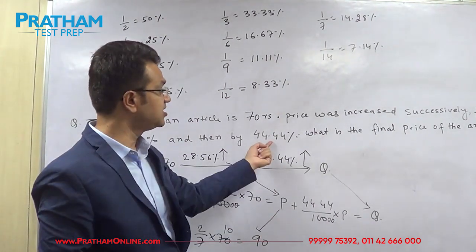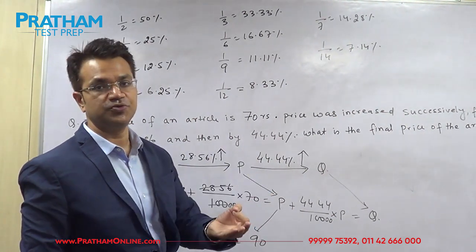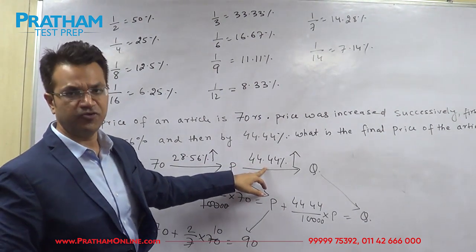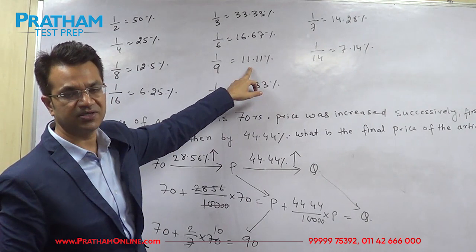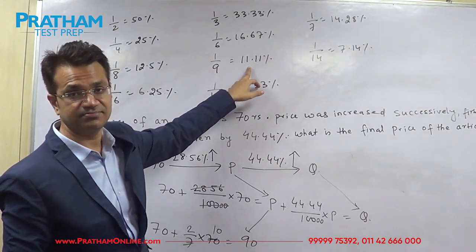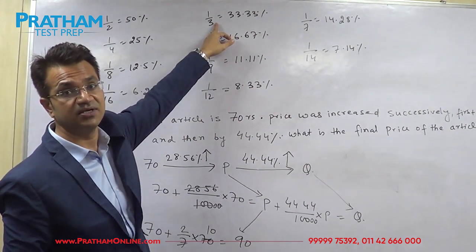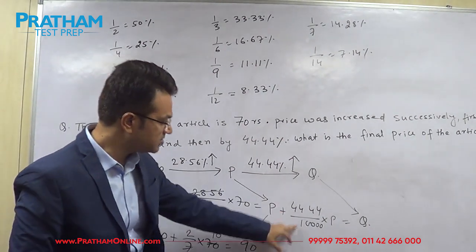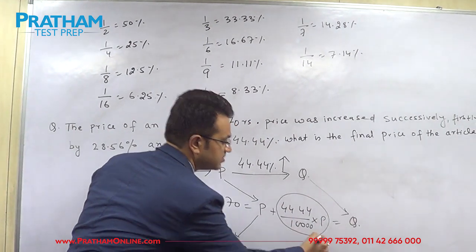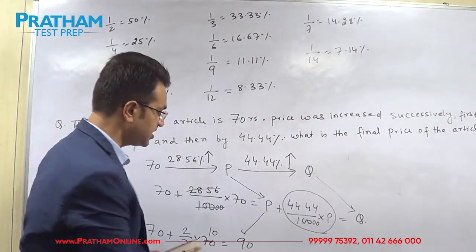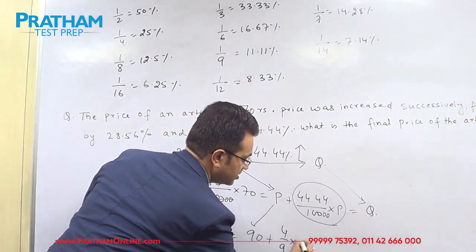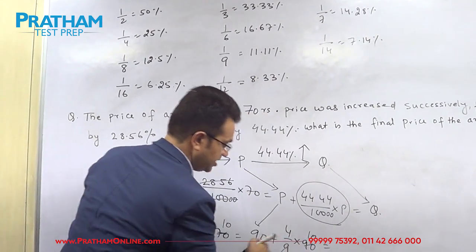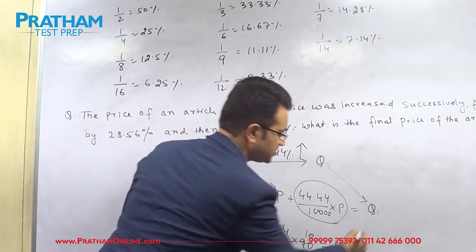On this price P, again we have an increment of 44.44%. If you know the percentage-fraction value, it becomes very easy. 4/9 is 44.44%. So instead of the complex conventional method, you can directly write 90 plus 4/9 of 90. The 9 cancels with 90, giving 90 plus 40, which is 130. This 130 rupees is nothing but Q — the final price.